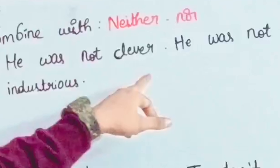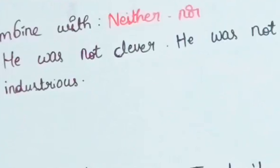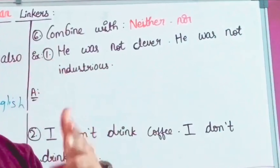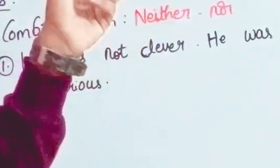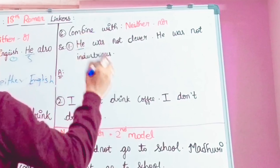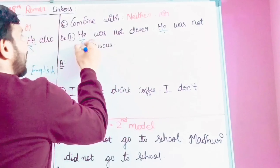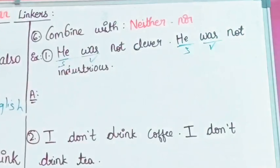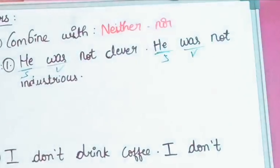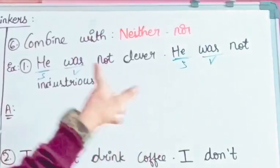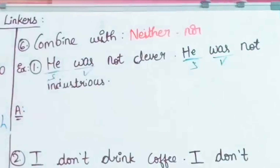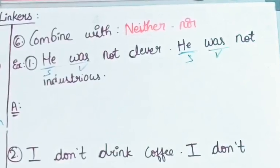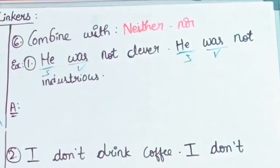Neither nor. He was not clever. He was not industrious. We don't have to use 'not' separately — same rule applies. Subject is He, second subject is He. First we introduce subject, then verb. The verb here is 'was' — was is a helping verb. So we introduce subject plus verb. He was neither clever nor industrious.